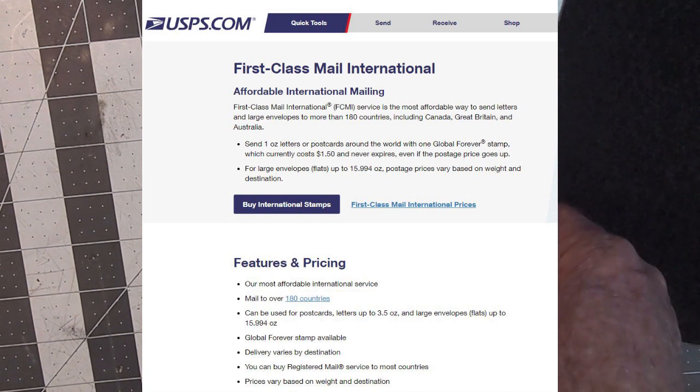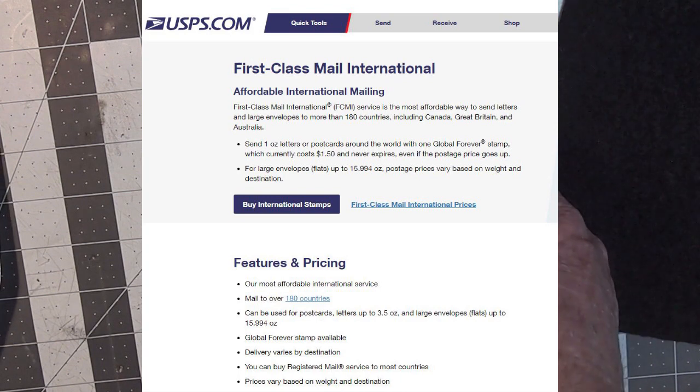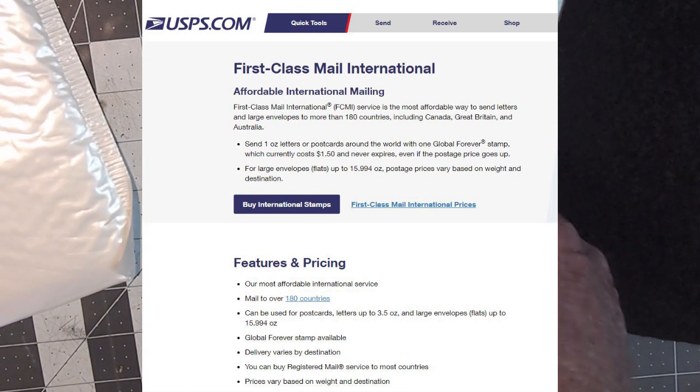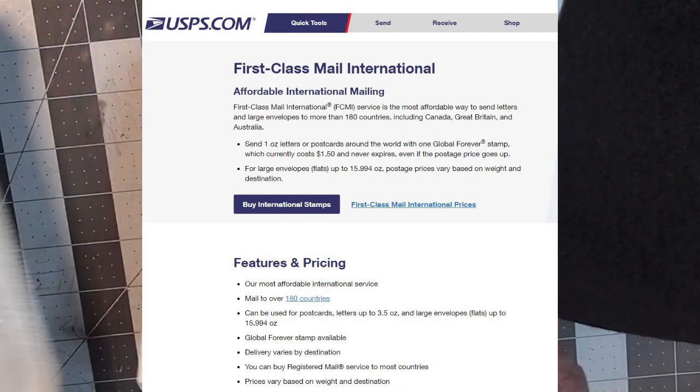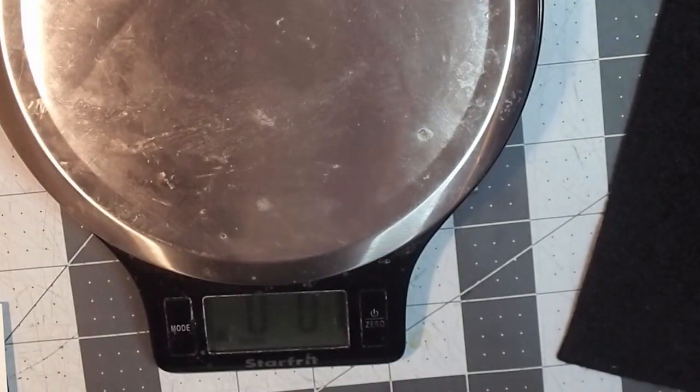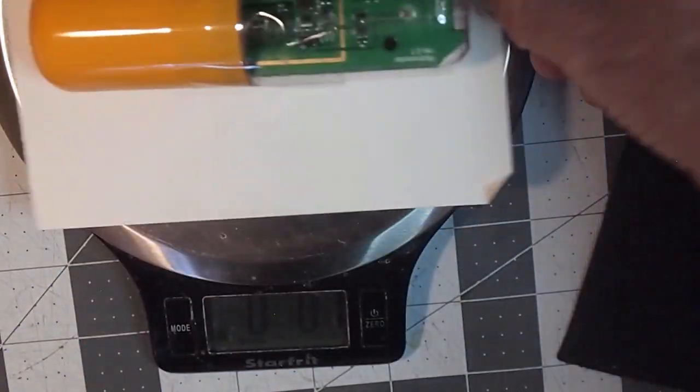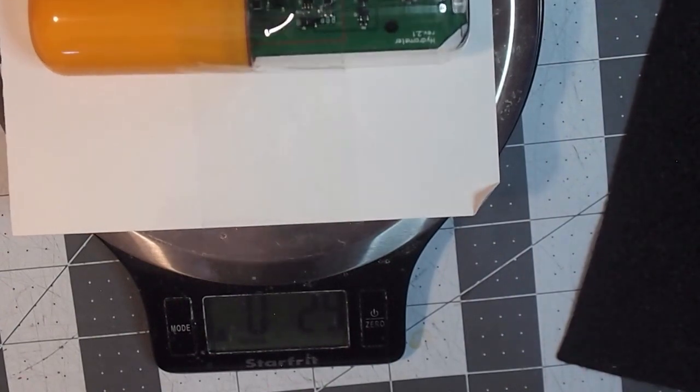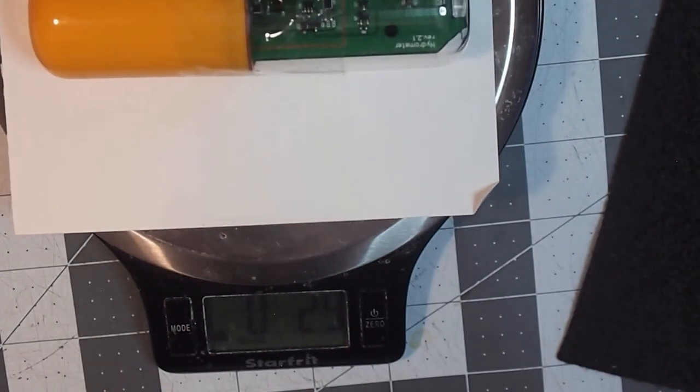Now, use US Postal Service first class in order to send this back. That particular service does not require tracking to send it back, and the package needs to be one pound or less. Now, as you can see from this scale, when we place our unit on there we're at about three ounces, so we're well underneath our pound allowance for the postal system.